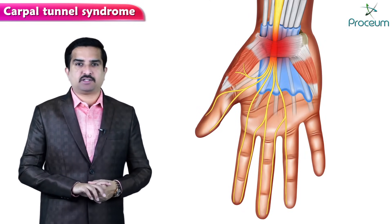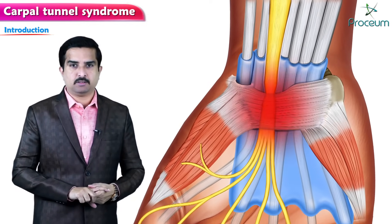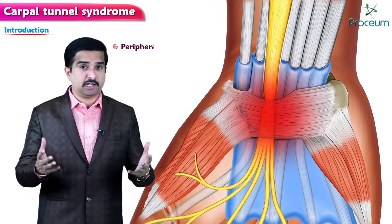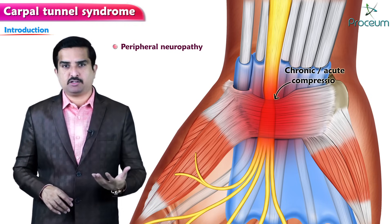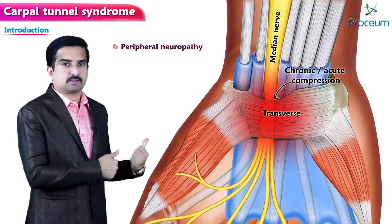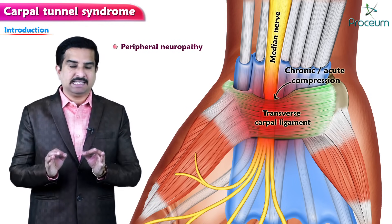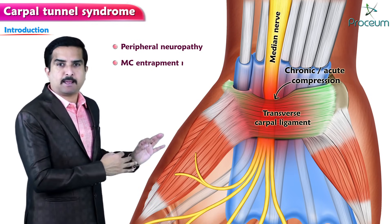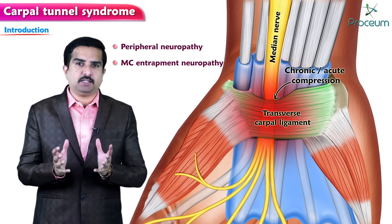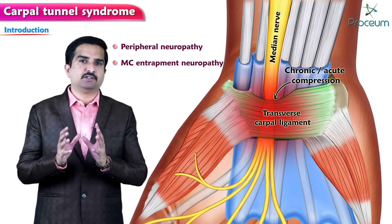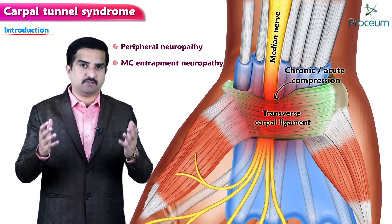Carpal tunnel syndrome is a peripheral neuropathy mainly caused by the chronic or acute compression of the median nerve by the transverse carpal ligament. This is the most common entrapment neuropathy of the upper extremity — 90 percent of all entrapment neuropathy cases of the upper extremity are due to compression of the median nerve, that is, carpal tunnel syndrome.